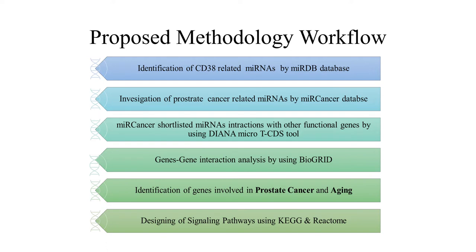The fourth step includes gene-gene interaction analysis using BioGRID software. The fifth step includes the identification of genes involved in prostate cancer and aging, and I hope to relate these to prostate cancer and aging. In the final step, I will design the signaling pathways.